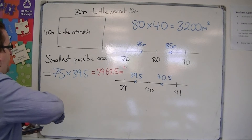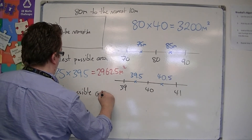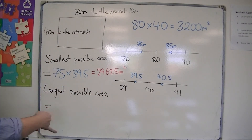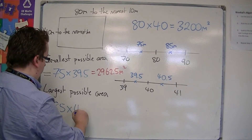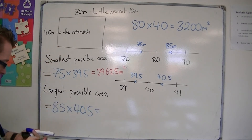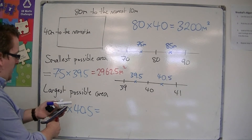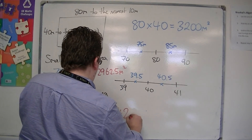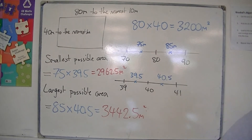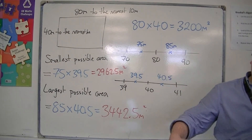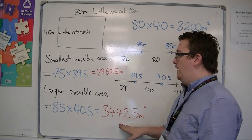If you were looking for the largest possible area, then you would be looking at the two larger lengths. So 85 times 40.5, which is 3,442.5 square metres. You can see that based on how accurately the farmer has measured his field, there is a significant difference between the smallest possible area and the largest possible area.